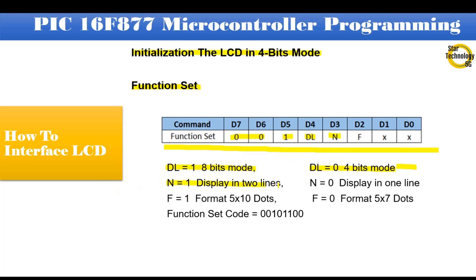If N equals 1, display in 2 lines, and if N equals 0, display in 1 line. We will use the 2-line mode. And D2 is F. If F equals logic 1, format 5 by 10 dots, and if F equals logic 0, format 5 by 7 dots. We will use the 5 by 10 dots format. D1 and D0 are logic 0. The function set code equals 00101100. This code initializes the LCD function: 4-bit mode, 2-line display, and 5 by 10 dots format.